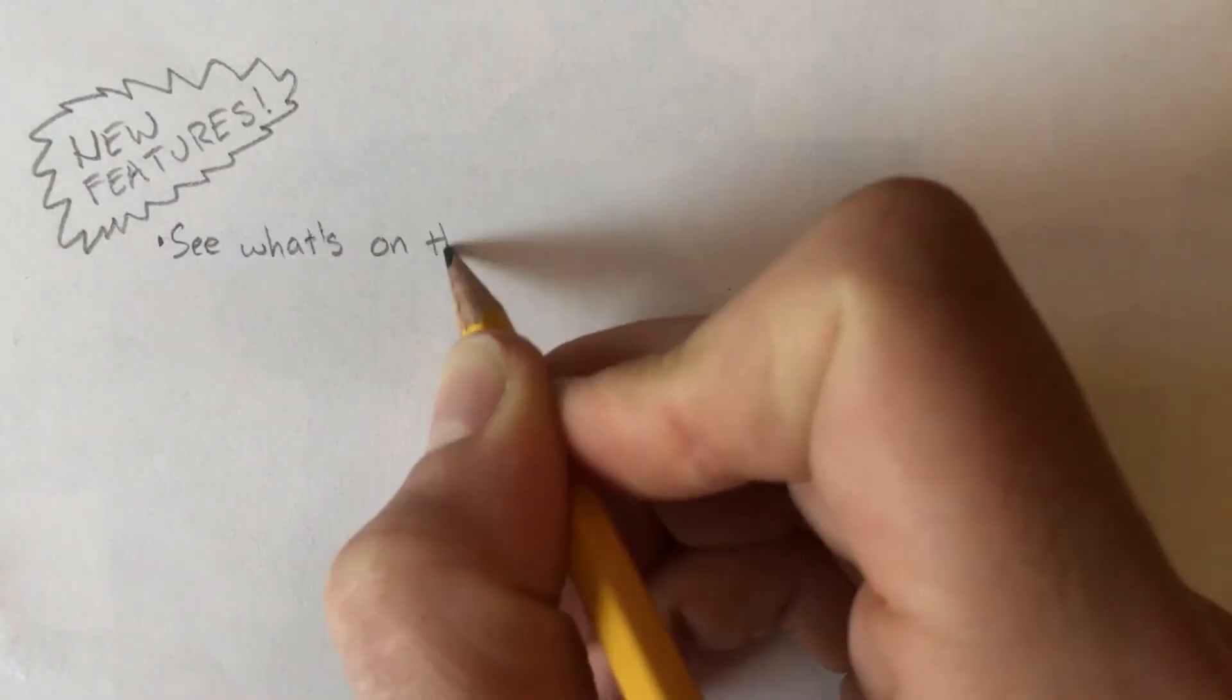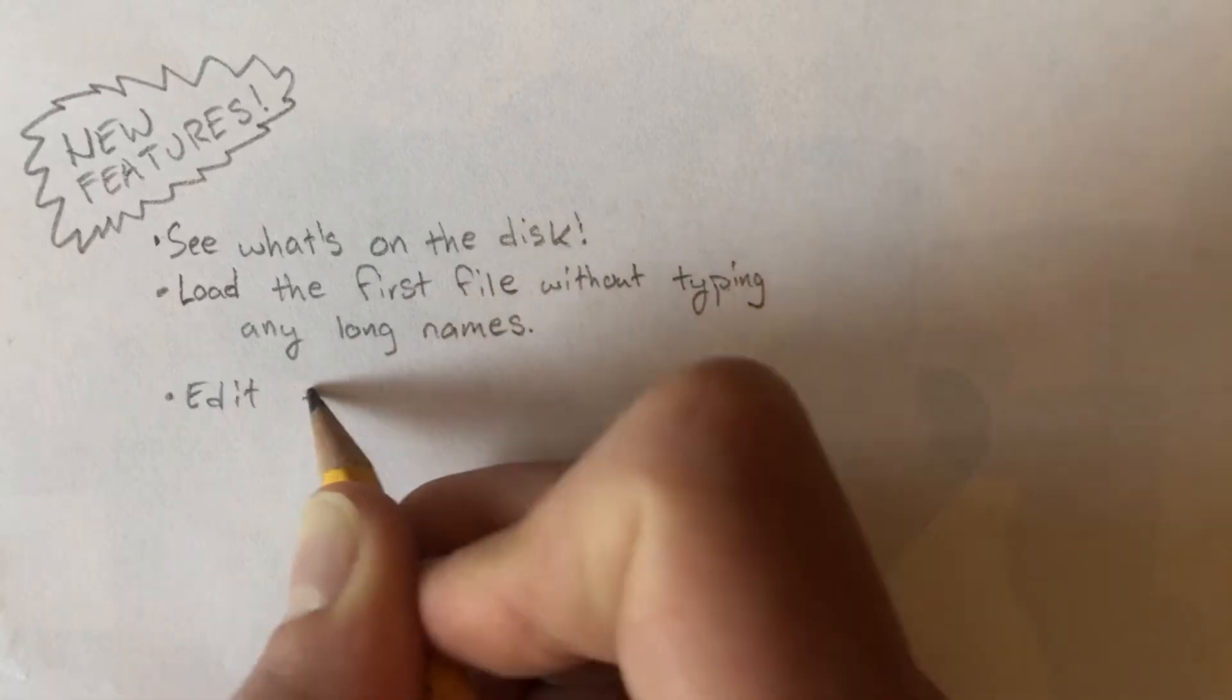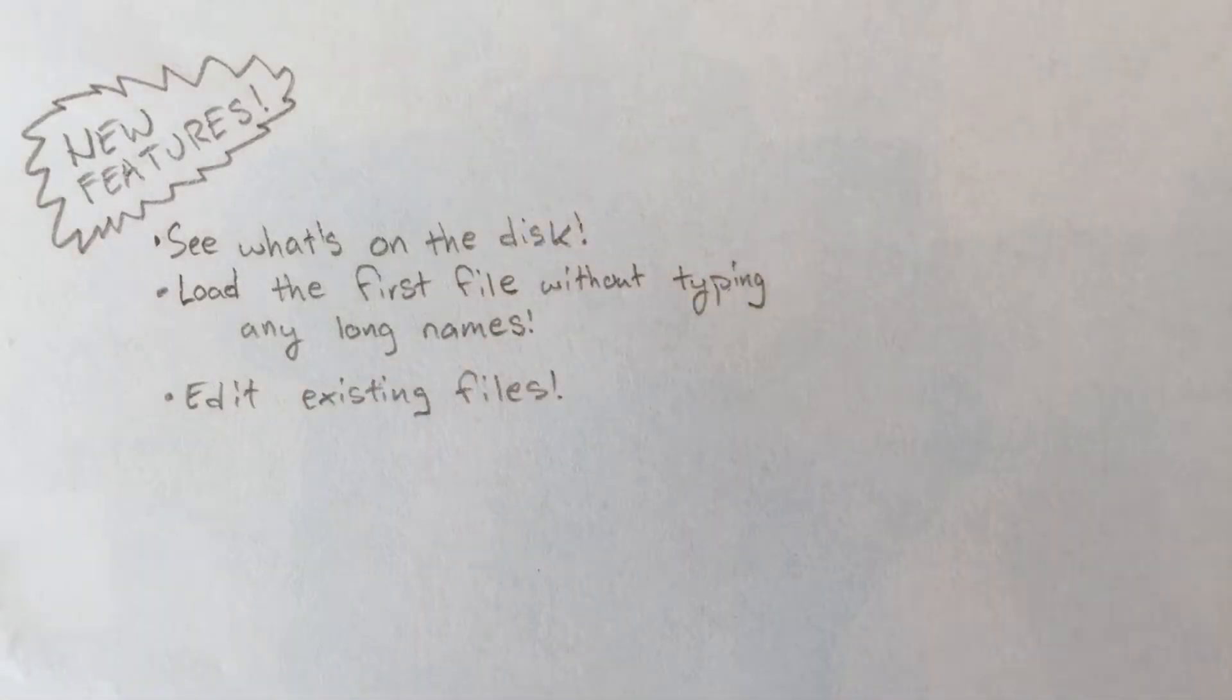I added three new features: one, printing a directory; two, loading a first file on the disk; and three, overwriting an existing file. These took up the remainder of my winter break that I had to work on this. And by the end of the break, it was capable of performing all five of these functions.